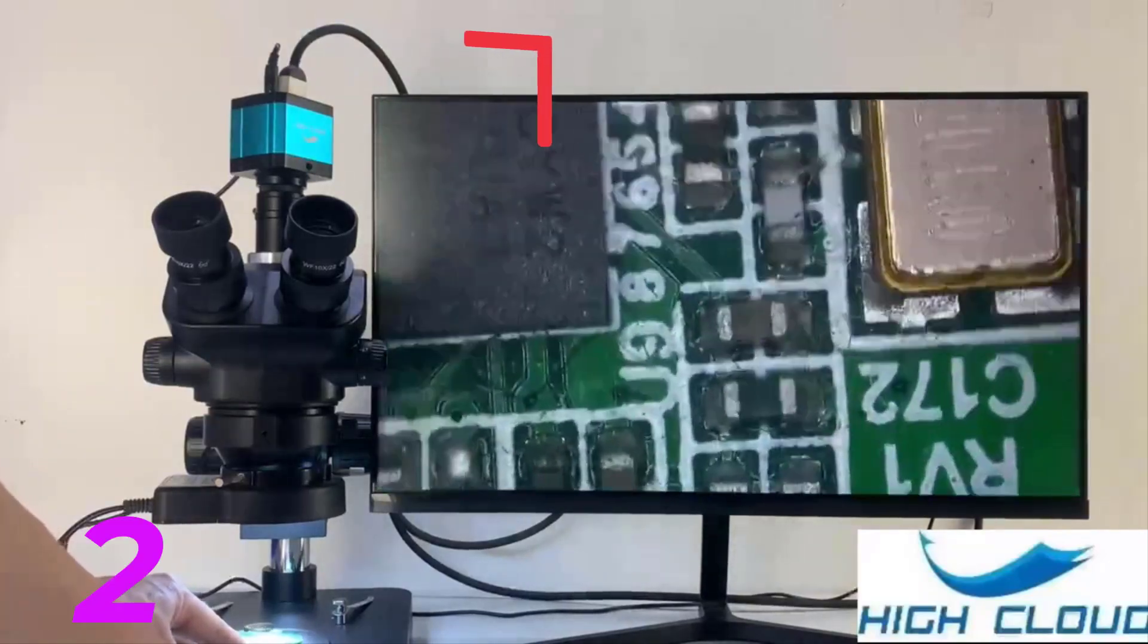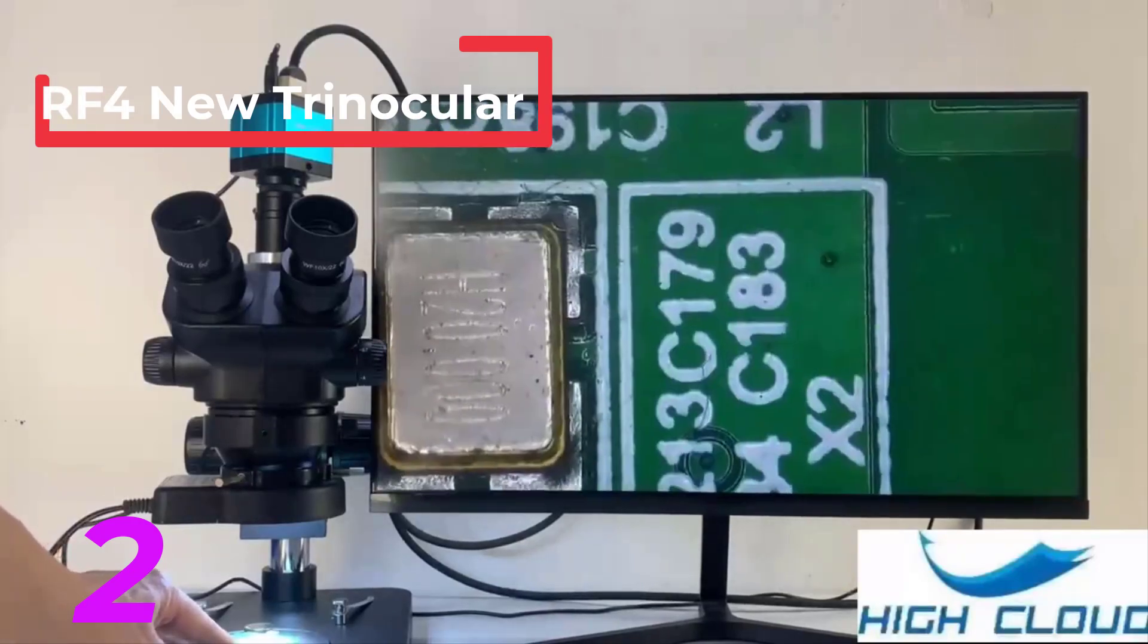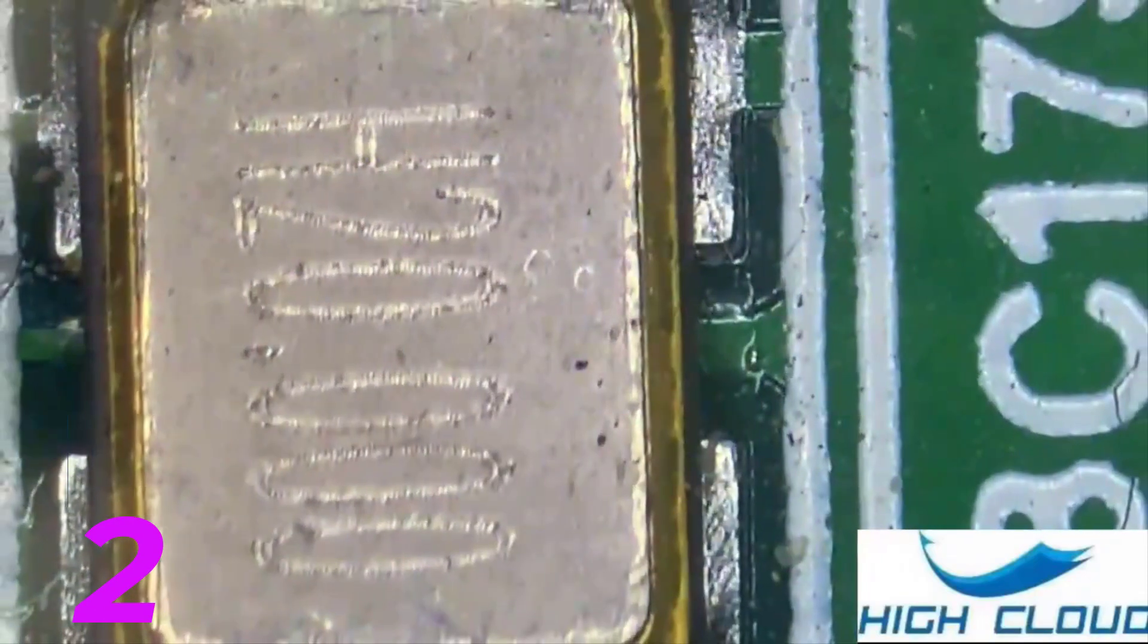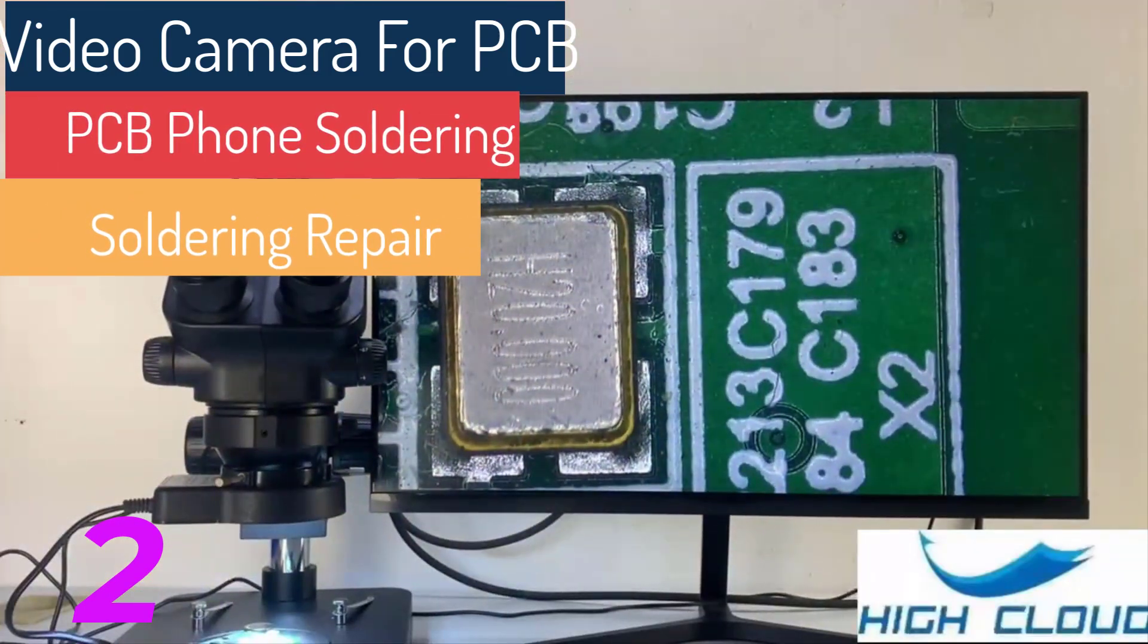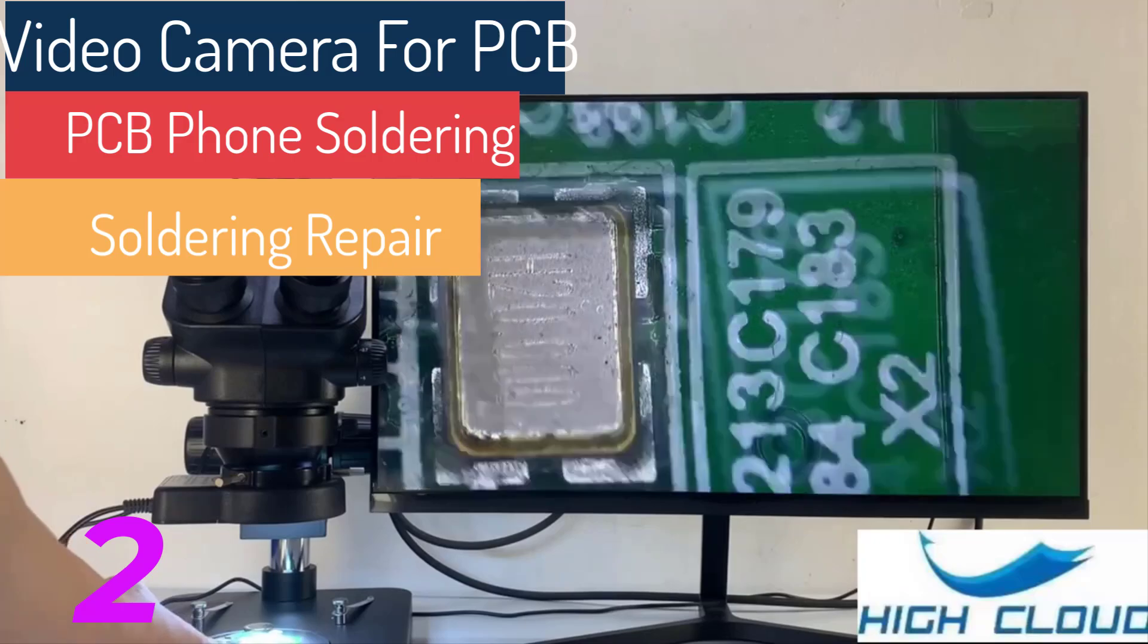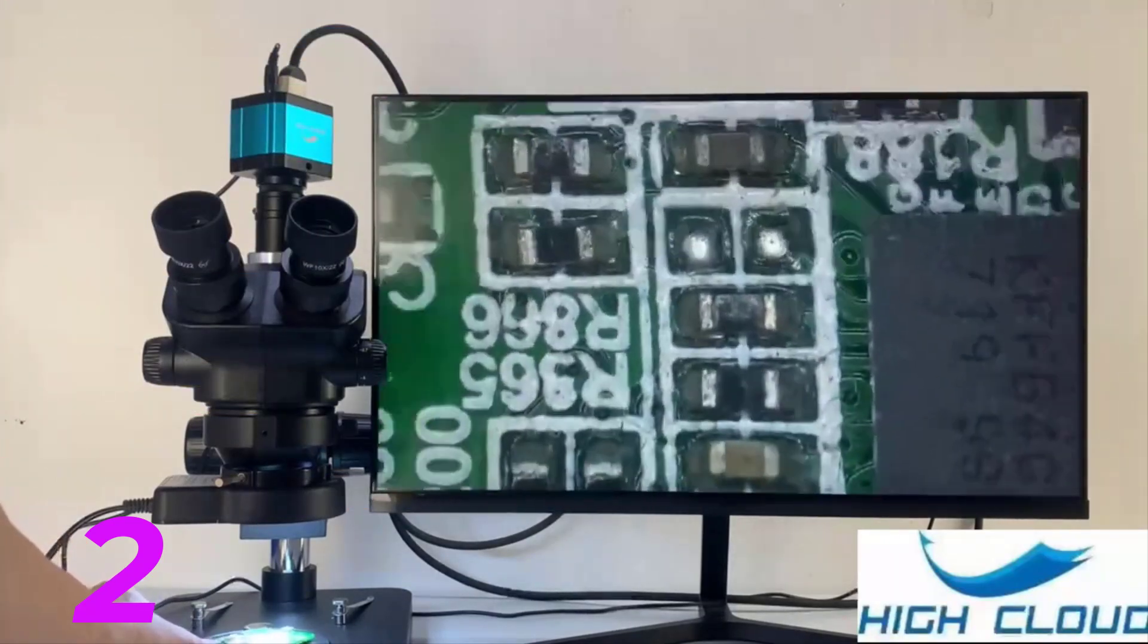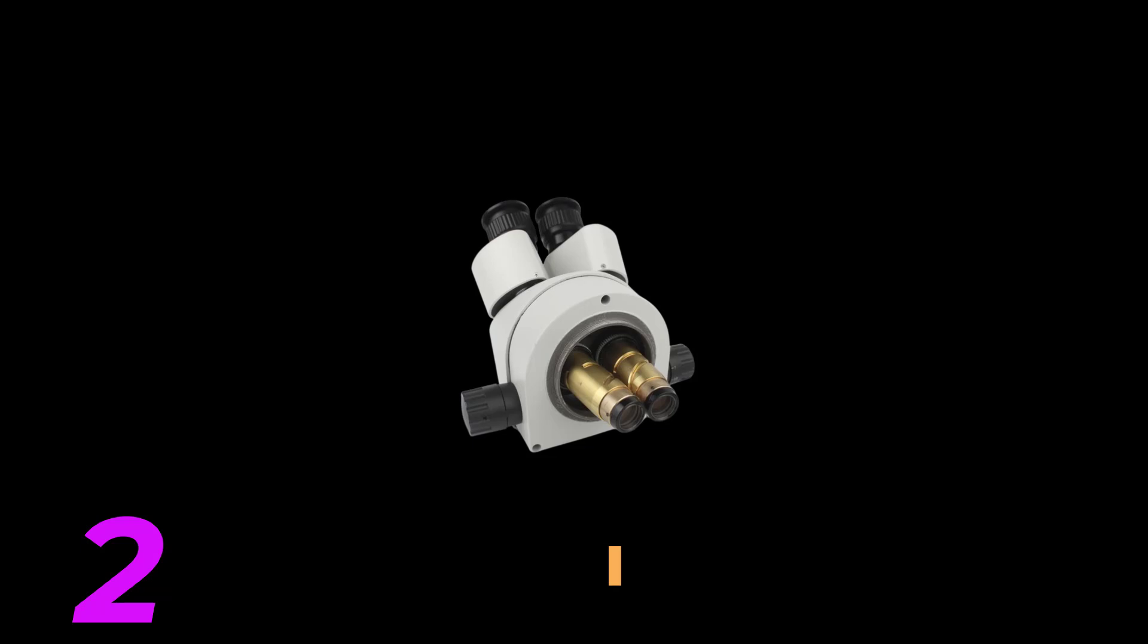This microscope is equipped with wide-field 10X-25X glass eyepieces fixed at a comfortable 30-degree tilt to reduce neck strain. These eyepieces can be easily adjusted for different interpupillary distances without losing focus. The 5-megapixel electronic eyepiece combined with the 360-degree 7-inch LCD screen allows you to get a larger and more detailed view, eliminating the need for an external display.